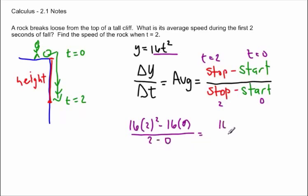So 16 times 4 minus 0 over 2, okay, and this is going to equal 32 feet.